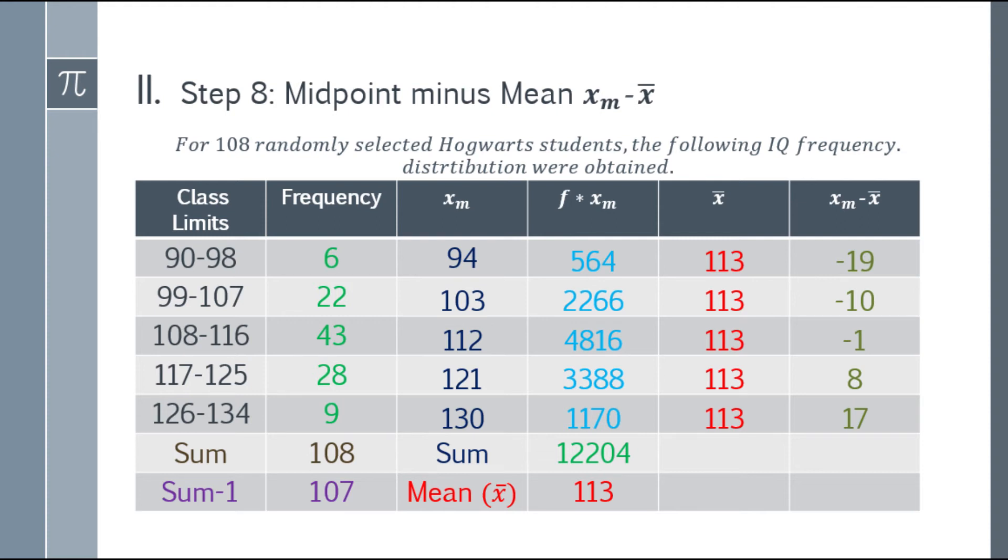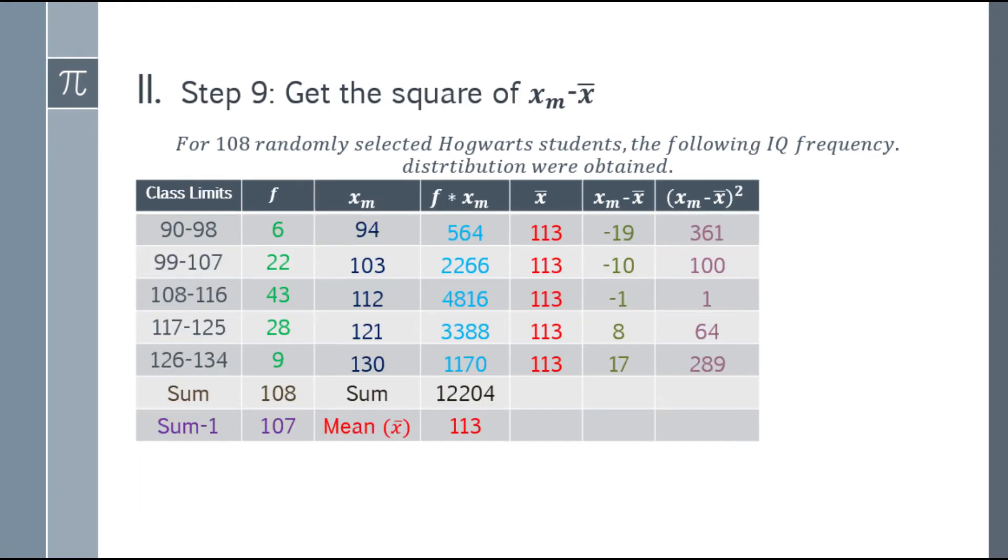For the new column, we need to get the square. The square of negative 19 is 361. Negative 10 squared is 100. Negative 1 squared is 1. 8 squared is 64. And 17 squared is 289. This eliminates the negatives.